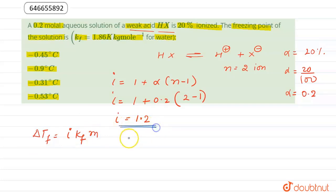Now delta Tf can be calculated as i into Kf into small m. We are given i is equal to 1.2, Kf is 1.86 kelvin kilogram per mole, and m molality value is 0.2 mol per kg.